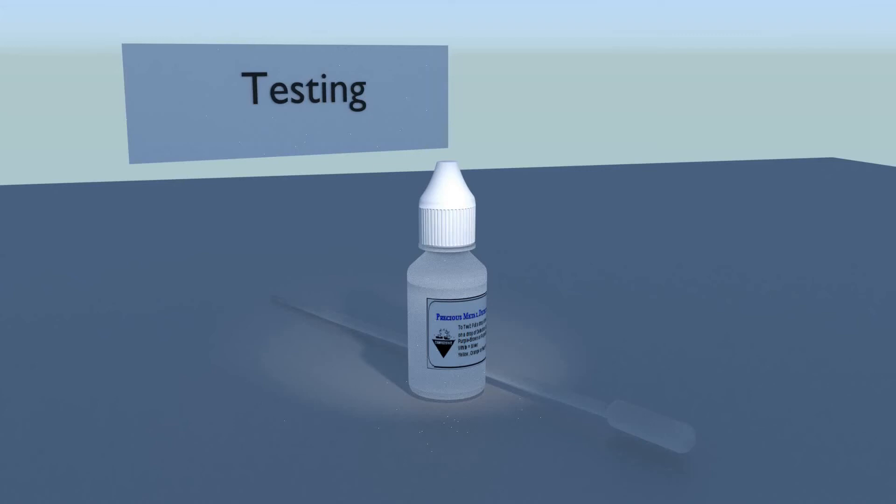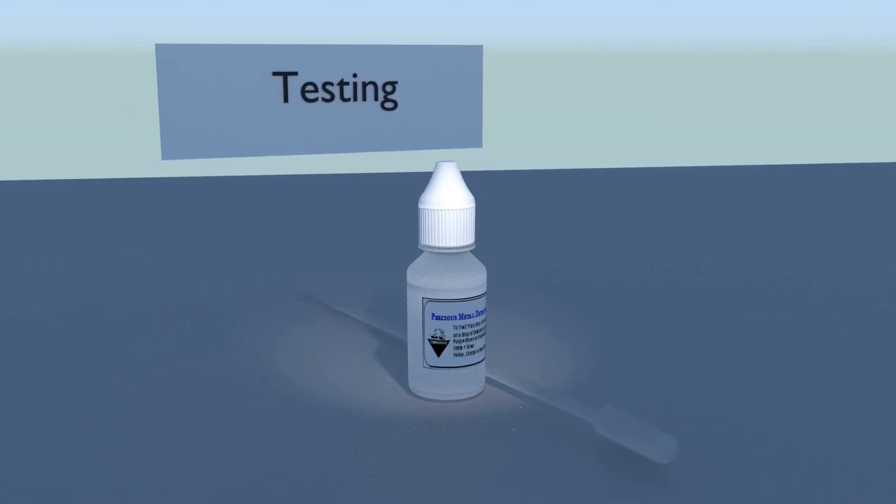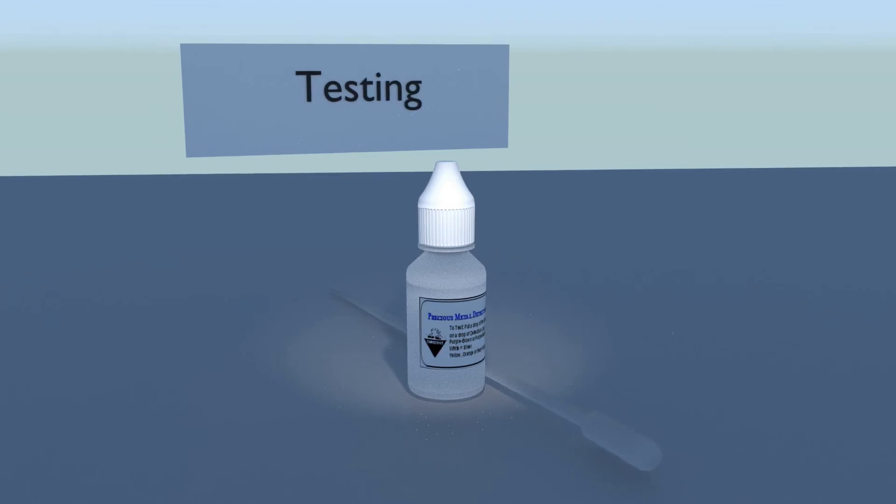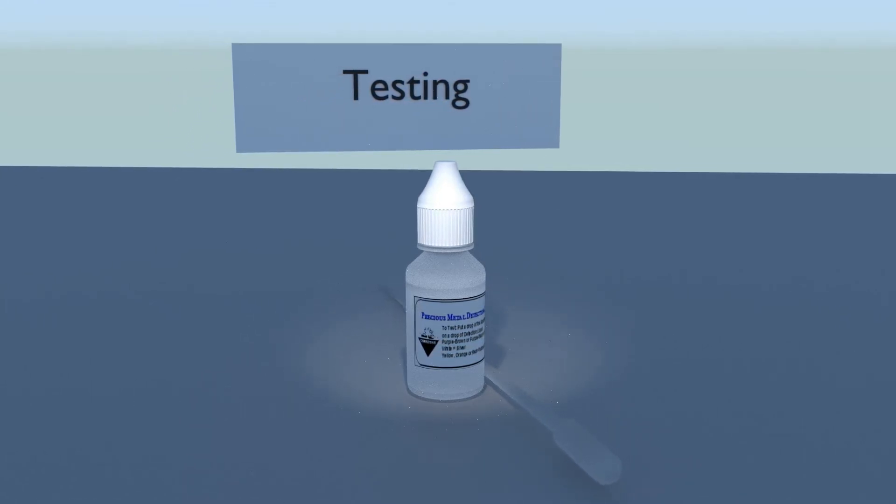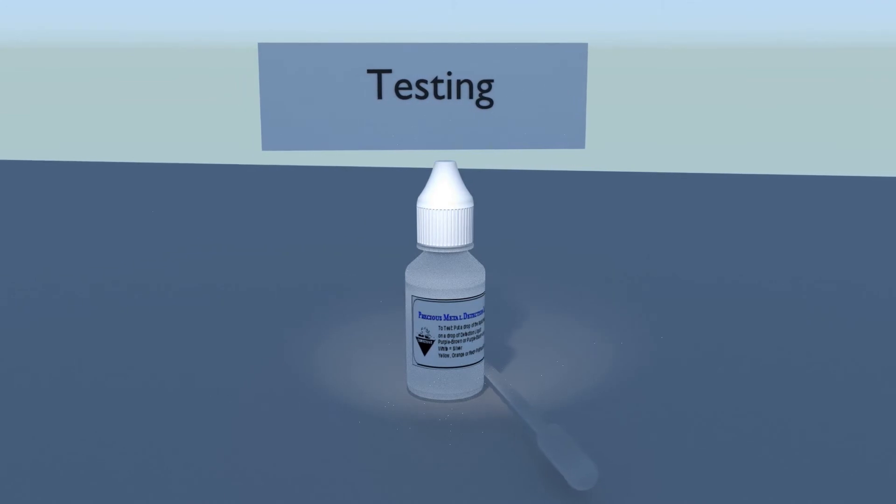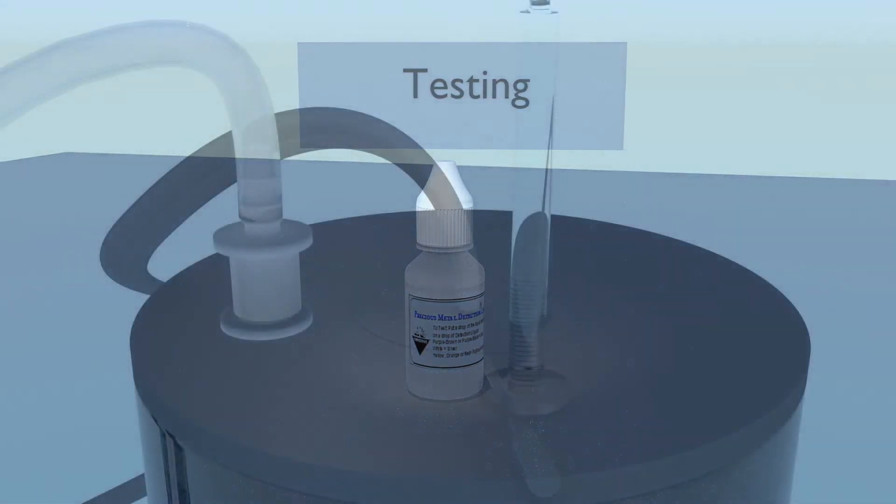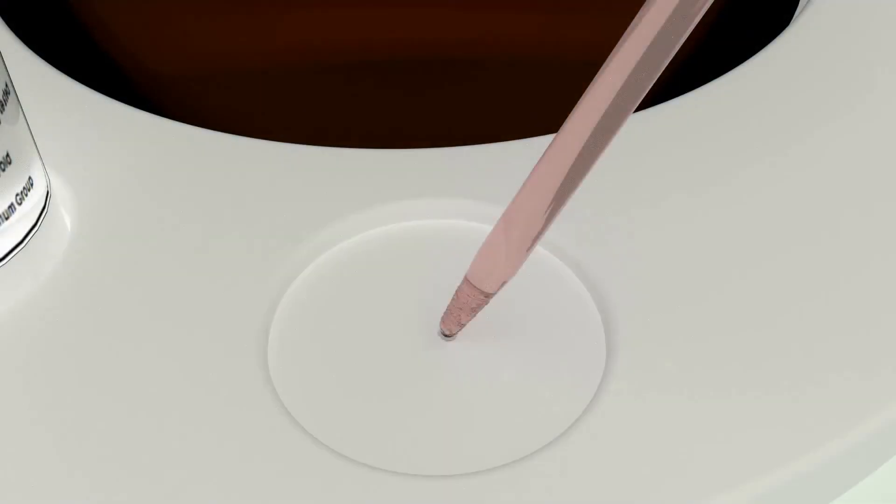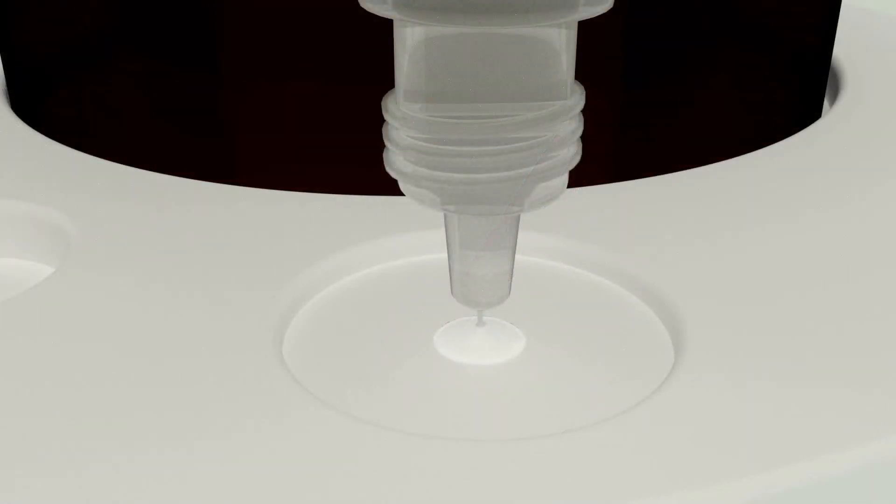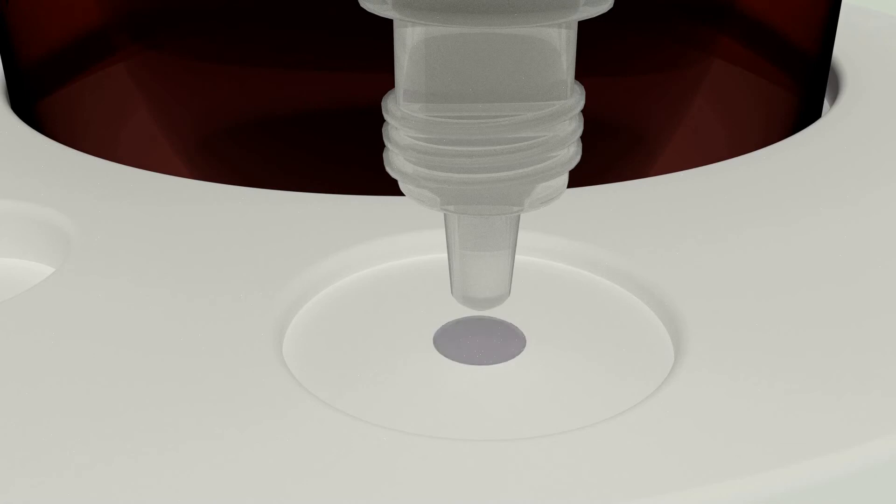Testing to ensure that no gold remains dissolved. When precipitation has concluded, no gold remains dissolved in solution. We will now test the solution to ensure that precipitation has finished. Remove the thermometer. Then take a small sample of the solution using the pipette. Place a couple of drops of the solution on the spot plate. Now, add a few drops of precious metal test solution to the sample.